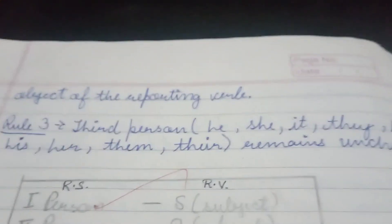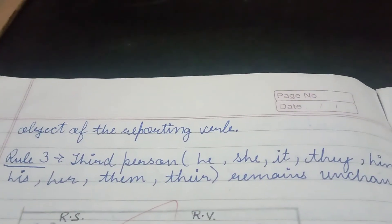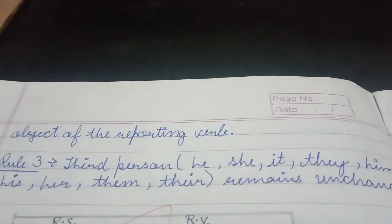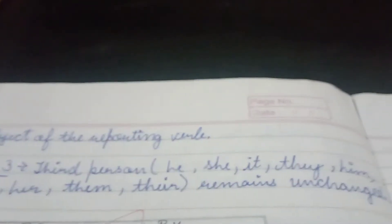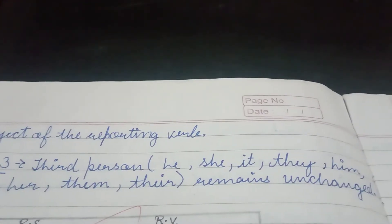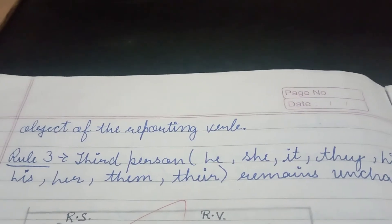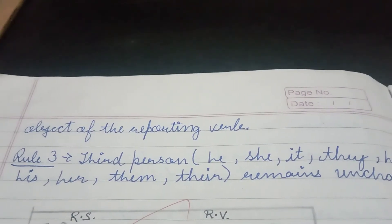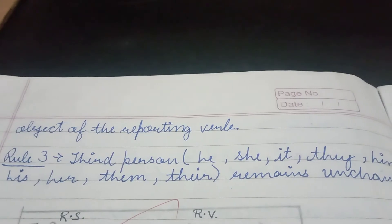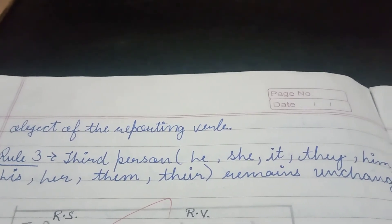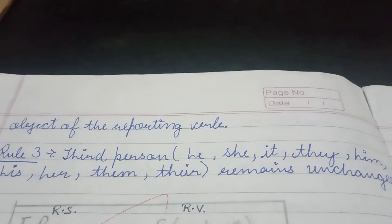Rule 3 is about the third person — he, she, it, they, him, his, her, them, their. If we have third person in the reported speech, then it remains unchanged. Because the first person changed as per the subject of the reporting verb, the second person changed as per the object of the reporting verb, and the third person remains unchanged in the reported speech.